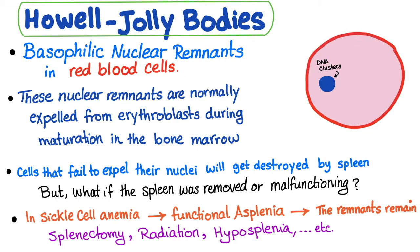Why does this happen? During the process of hematopoiesis in the bone marrow, the nuclear remnants are normally expelled from erythroblasts. Erythroblasts have a nucleus, while erythrocytes or red blood cells do not. There is a stage where this nucleus is expelled from the late erythroblasts during maturation, so normally these remnants should be removed during the maturation process.